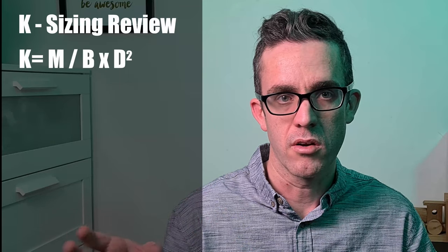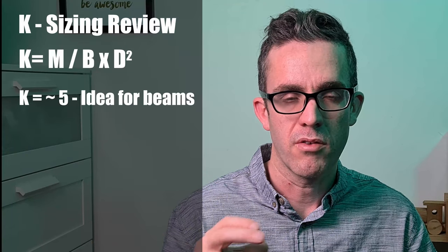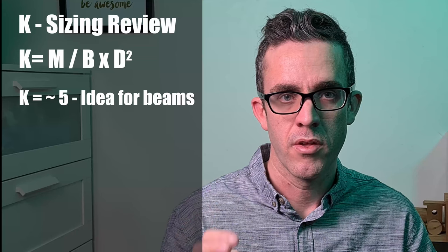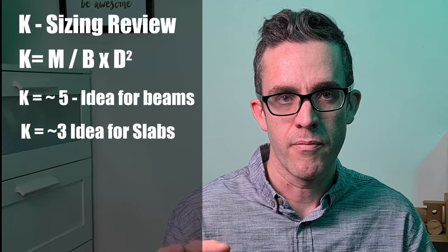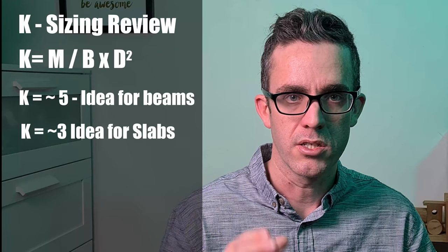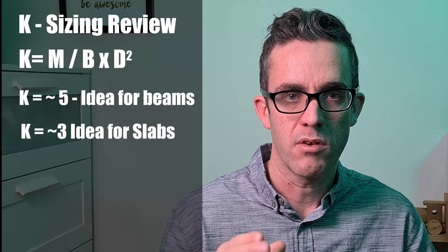So from this we can work out the relative steel stress as to work out if our structure is going to be over reinforced or under reinforced. For a beam to be lightly reinforced you roughly want to see about 5. This makes for an efficient structure for a beam structure. For a slab you want to see about 3. Now why 3? This is generally because slabs are normally governed by deflection not by strength. So this is why you see a relatively lower K.